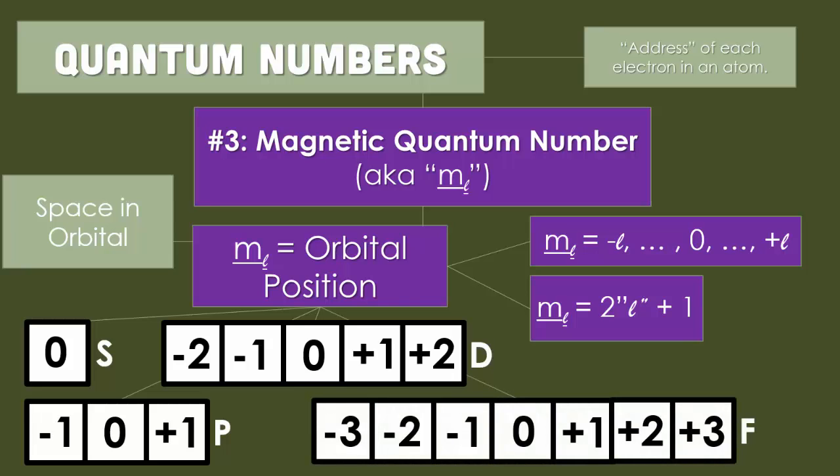p has 3 orbitals, so the center is 0, to the left is negative 1, to the right is positive 1. d has 5 orbitals: center is 0, to the left is negative 1 and negative 2, to the right is positive 1 and positive 2. Finally, f has 7 orbitals: center is 0, anything to the left is negative, anything to the right is positive.